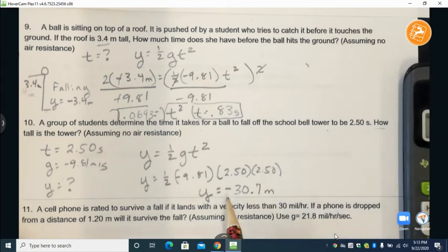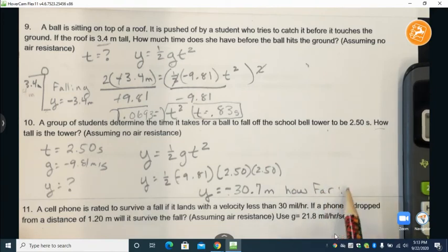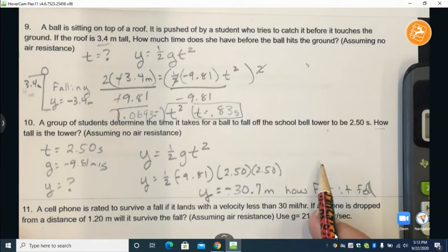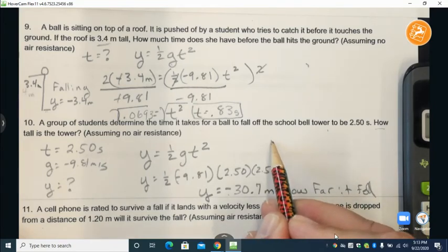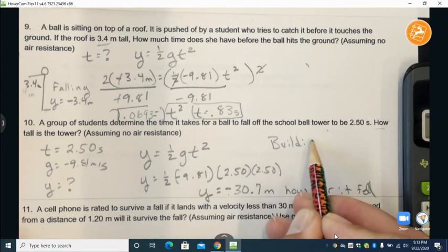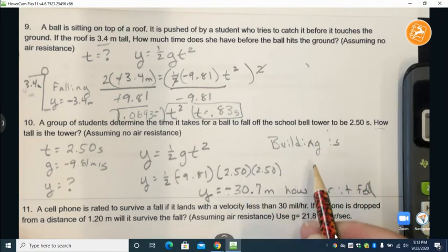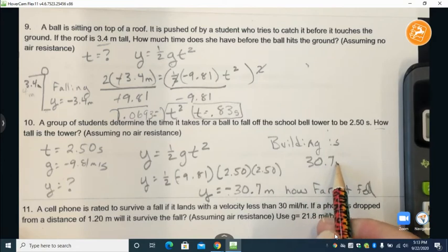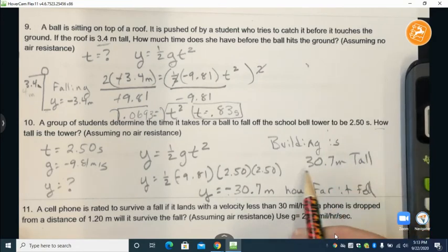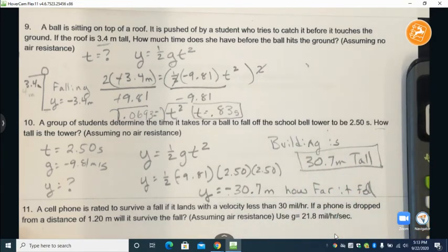Technically we have a small error here because this is how far it fell. We want to know how tall, so building is just take the negative off, thirty point seven meters tall. It's a little bit annoying there but that's the difference between the positive and the negative.